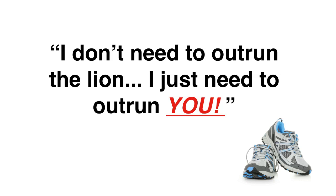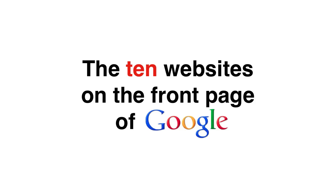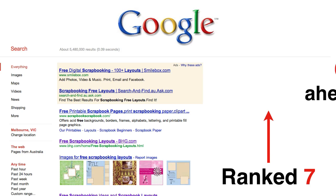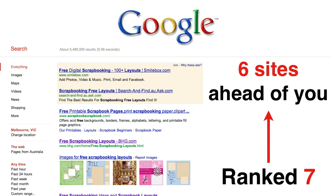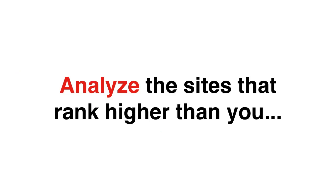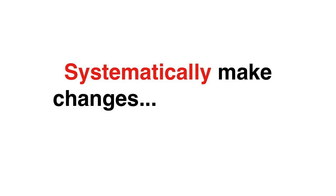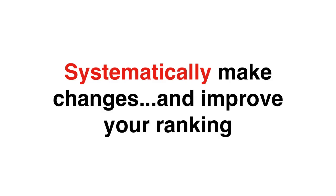In any niche market, and for any particular keyword, you're really only competing against the ten websites that are currently ranking on the front page of Google. For example, if you are currently ranked number seven, then you should be focusing all your efforts on outranking the six sites ahead of you. The bottom line is that if you can analyse the sites that rank higher than you and find out why they are currently beating you, then you can systematically make changes to your site and gradually improve your ranking.